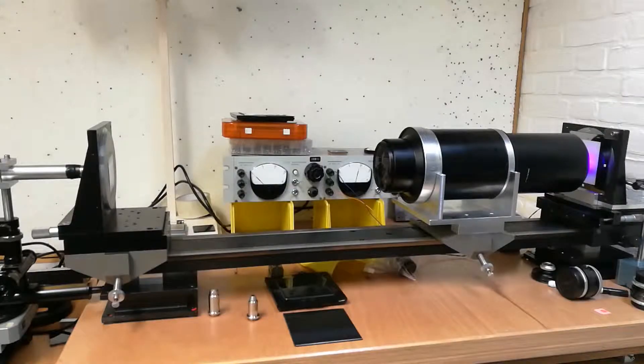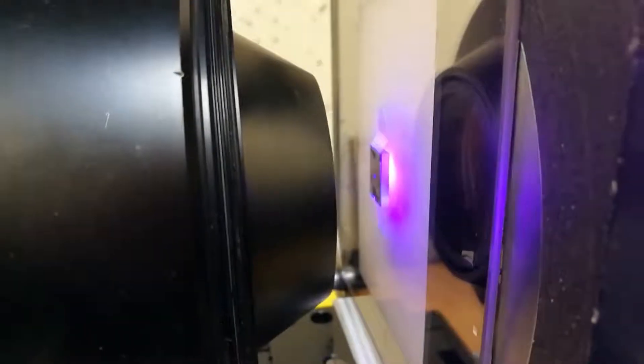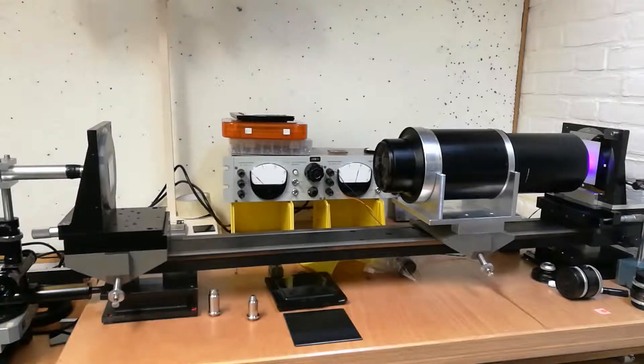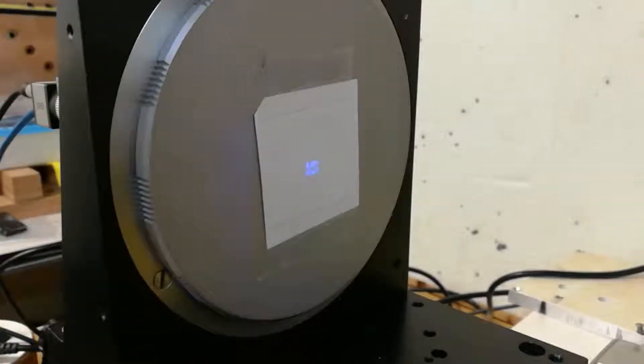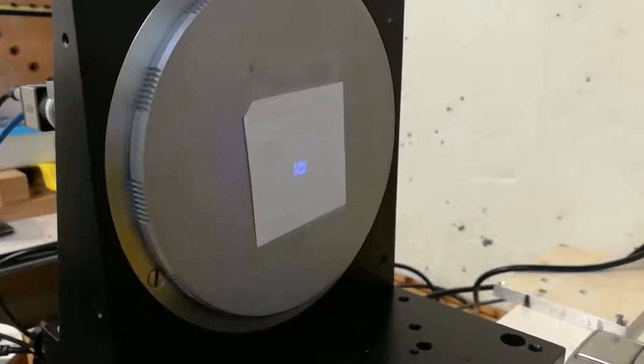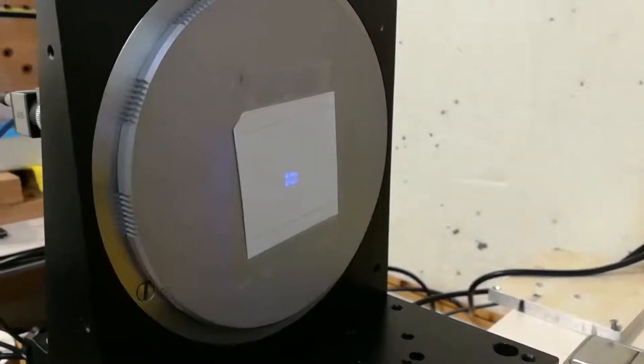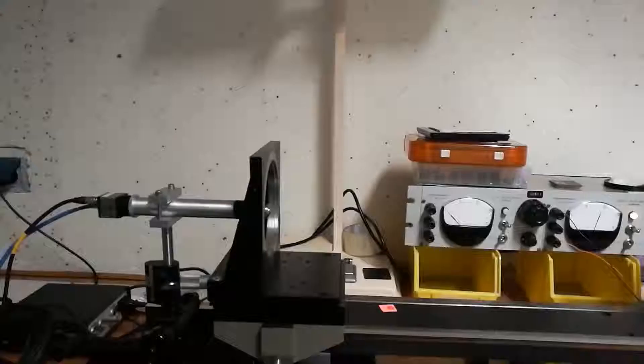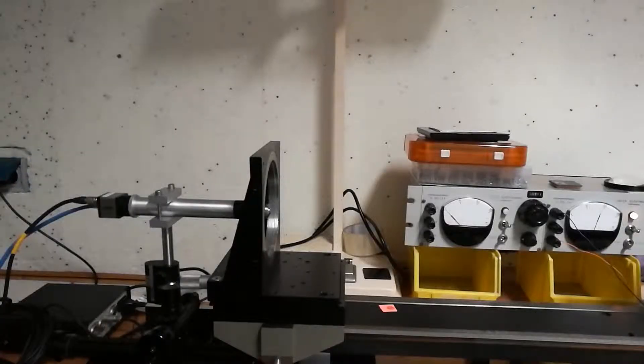Okay, so this is what the actual setup looks like, the configuration 2 setup. To the right you have the photo mask with the UV light source and to the left you have the projection of the photo mask, which is 5 times bigger than the photo mask pattern itself. Now I just placed a small screen here to demonstrate that the projection is actually there. And what we are going to do is remove this screen and then replace it with the microscope objective in order to study this projection.